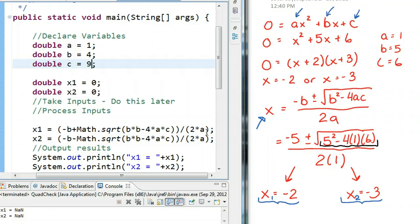NaN means not a number. And, we get NaN when we do one of two things. We either try and take the square root of a negative number, or we try and divide by zero.